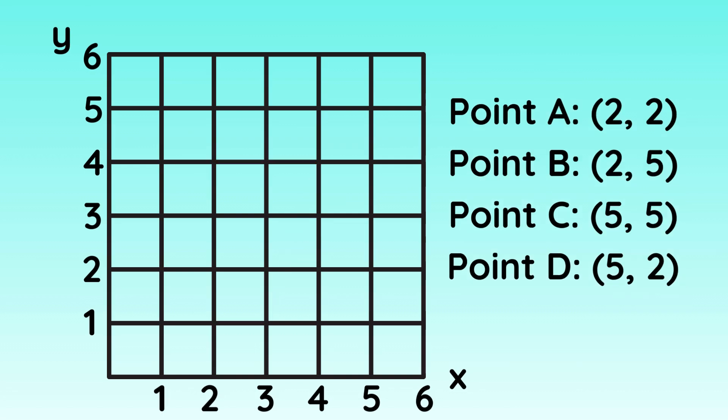Next set of instructions. Point A: 2 across and 2 up. Point B: 2 across and 5 up. Point C: 5 across and 5 up. And Point D: 5 across and 2 up. If you have plotted your points correctly, your shape will look like this.